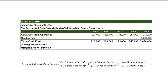Hey everyone, so today I'd like to do a quick video for the Acre 101 series. This is going to be on discounted cash flows and how to use this method to value real estate opportunities. The discounted cash flow method, otherwise referred to as the DCF method, is a method in which an investor will try to back into his or her purchase price for a property using the projected future cash flows and a specified discount rate.